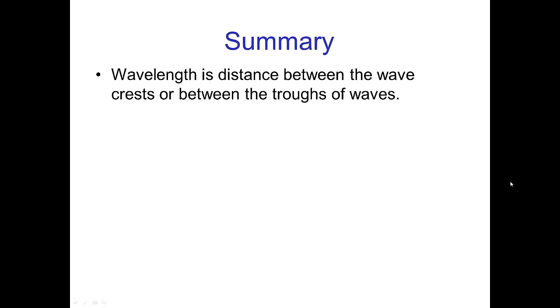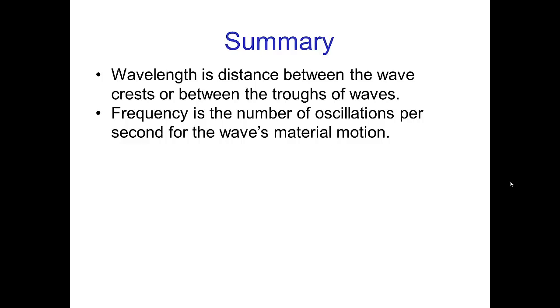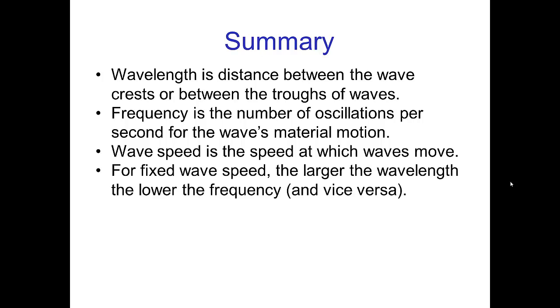In summary, wavelength is the distance between the wave crests or between the troughs of waves. Basically it's just the length of a wave. Frequency is the number of oscillations per second for the wave's material motion. Wave speed is the speed at which waves move. For fixed wave speed, the larger the wavelength, the lower the frequency. For example, the long pipes of the organ produce the low notes.